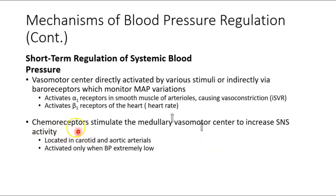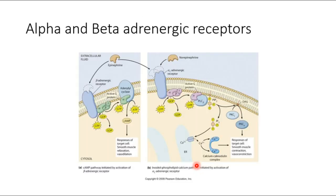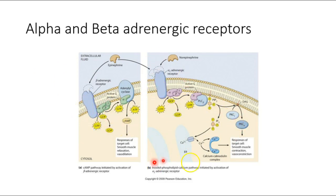Baroreceptors also play a role. If you haven't already started dealing with alpha and beta adrenergic receptors in pharmacology, you will soon. Those receptors activate metabotropic pathways to change things inside your cells, though we won't go into the full cellular pathway.